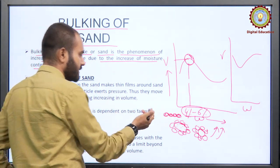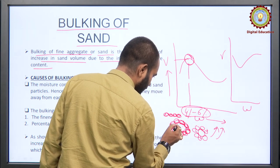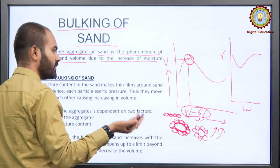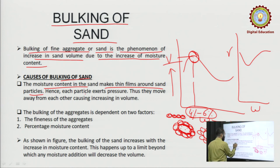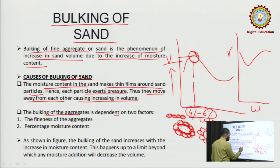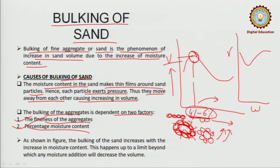The volume will be highest because there are air voids and flocculation has occurred — this phenomenon is called bulking of sand. Due to water content, surface tension creates a film of water around the particles, due to which they get flocculated and entrap large voids between them, causing the volume to increase. The moisture content in the sand makes a thin film around each sand particle, causing particles to move away from each other and increasing the volume.